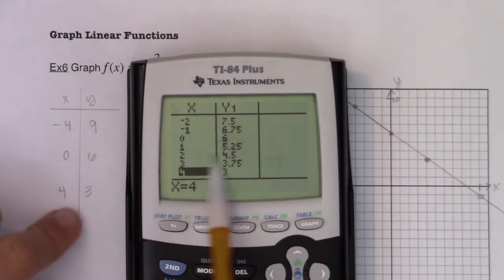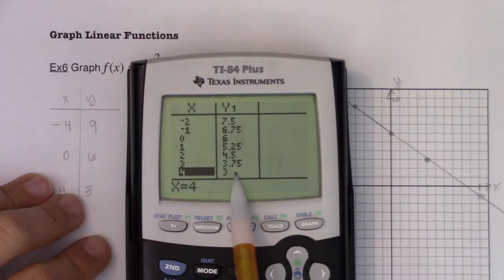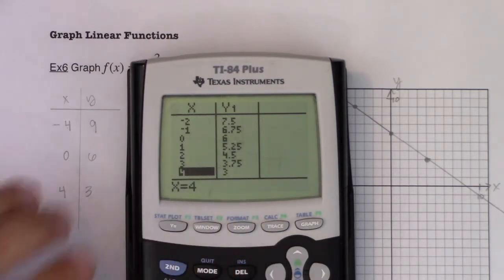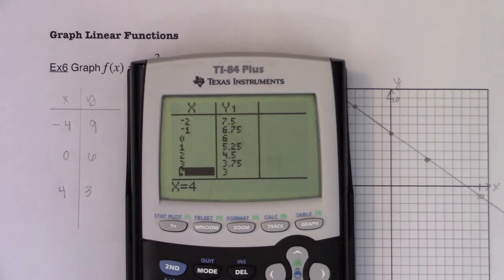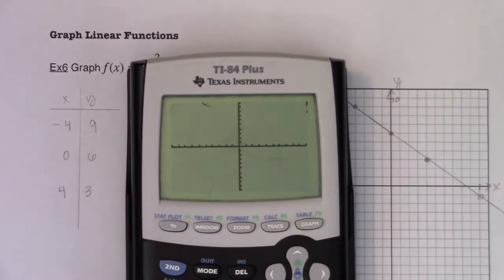Your calculator actually gives you far more y values than you need, but you can see all of these are little decimals, so they become a little harder to graph. And if I hit zoom six, there's that line. It looks pretty similar to what I've graphed on my paper. I'm feeling pretty good about it.